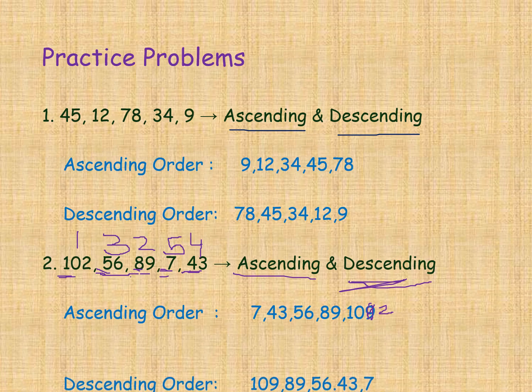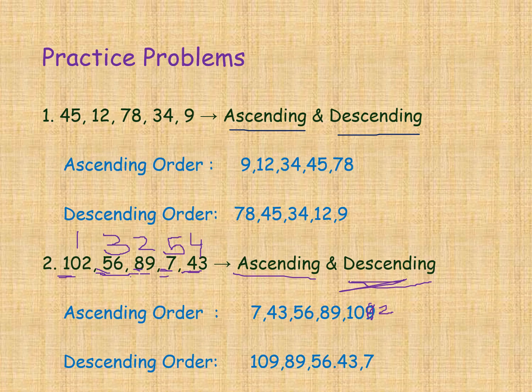Again I correct the 9 and put the 2. So the descending order is: 102, 89, 56, 43, and 7. This order is largest to smallest.